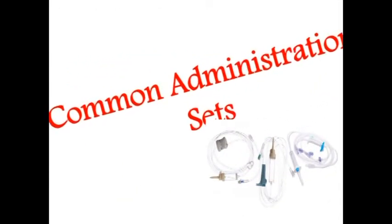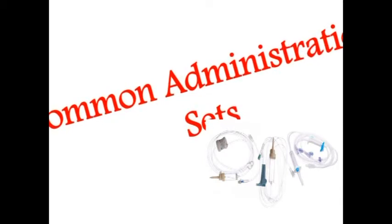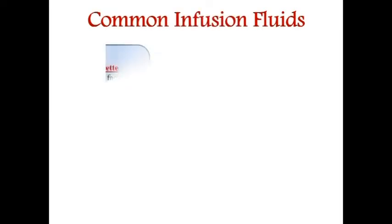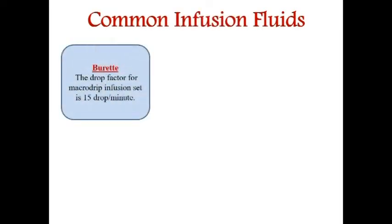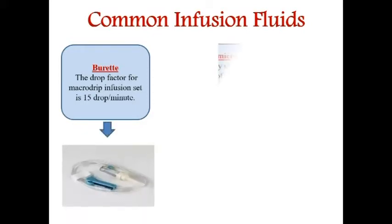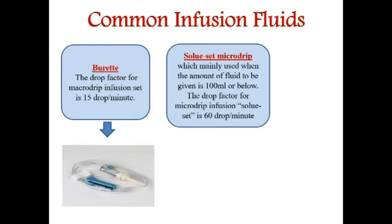Common administration sets used in pediatric patients: The normal or usual IV set has a drop factor of 15 drops per minute. The micro drip infusion set, also called a soluset, is mainly used when the amount of fluid to be given is 100 ml or below, and its drop factor is 60 drops per minute.